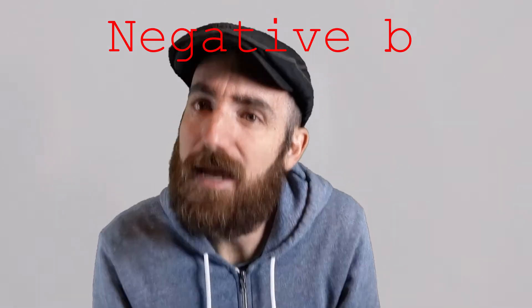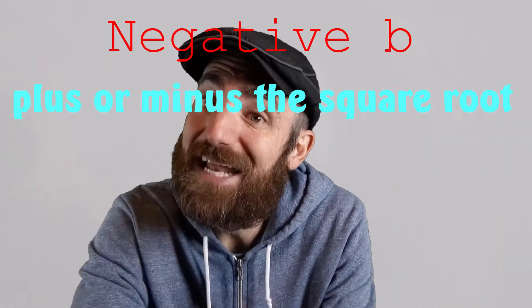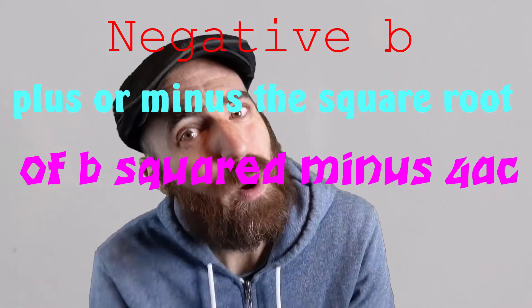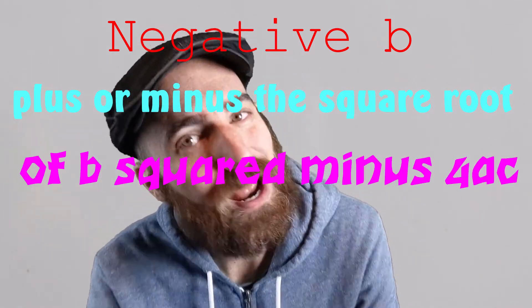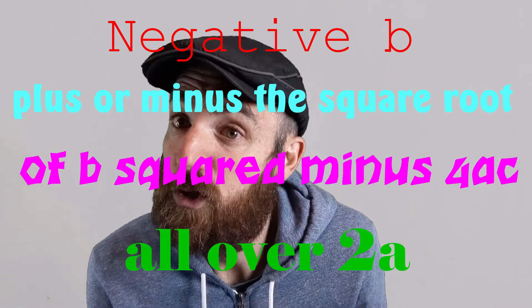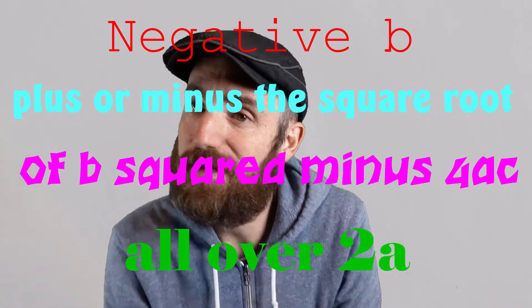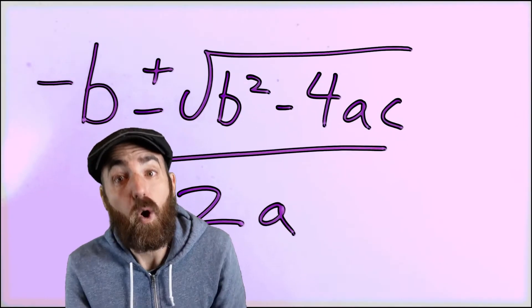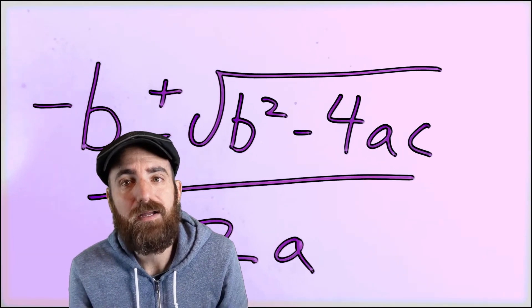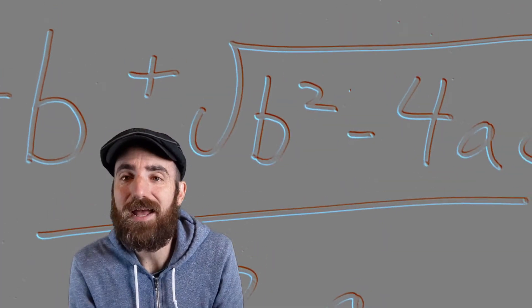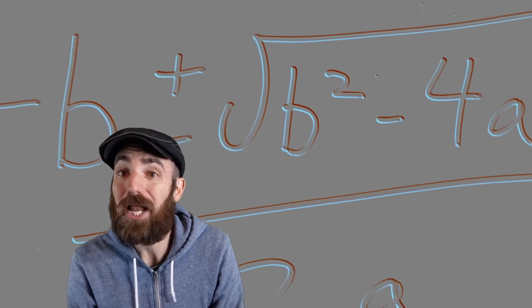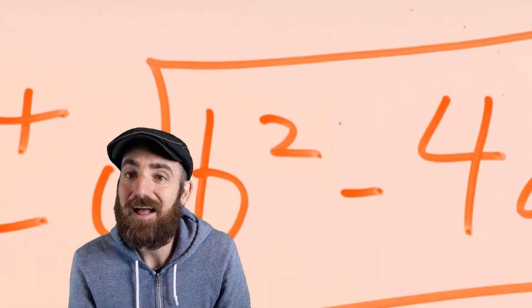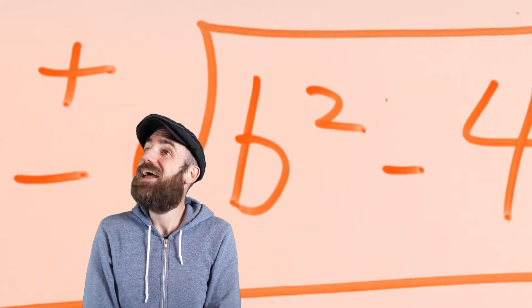Negative b plus or minus the square root of b squared minus 4ac, all over 2a. The quadratic formula — know it, learn it, live it, love it.